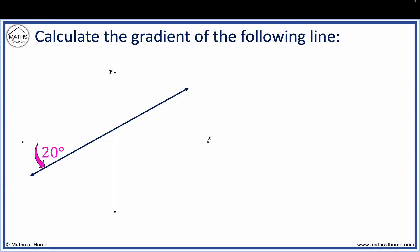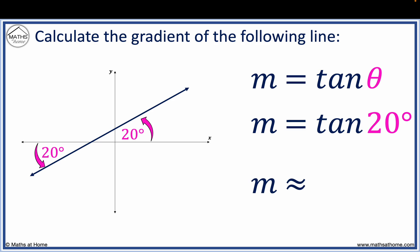Again, in this example, we find the gradient using m equals tan theta. Theta is the angle that is counterclockwise from the x-axis. This angle is 20 degrees, which is the same as our angle here. Therefore, theta equals 20. The gradient is found by evaluating tan 20 to obtain 0.364.